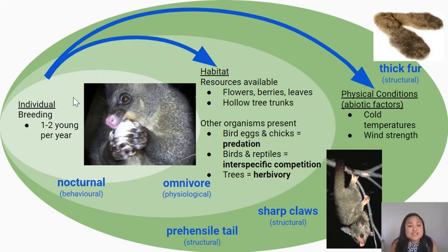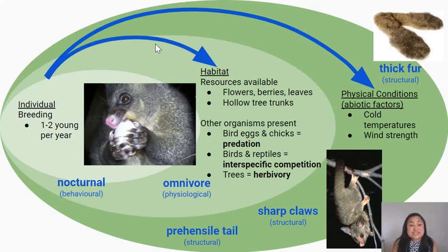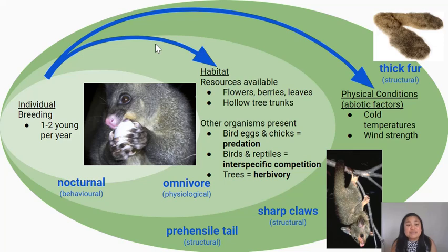Possums use their sharp claws to access food, holding it up to their mouths as shown in the picture. Their main food source is leaves, but they also eat flowers, berries, and even birds' eggs and chicks, making them omnivores. They are predators to birds and have a grazing relationship with trees and plants. There is interspecific competition between possums, birds, and reptiles competing for flowers and fruit. Because possums are much bigger, they eat a larger proportion of available food, which is problematic for native birds and reptiles — that's why we consider possums to be a pest.